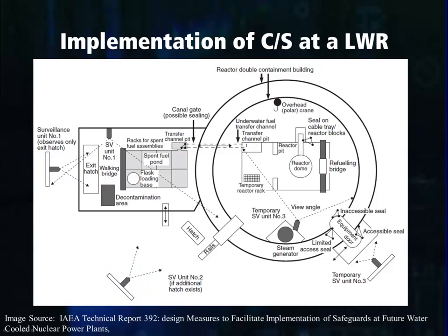An additional point where seals are used is on the reactor cover, or the reactor dome. By placing a seal here, the IAEA can monitor if the reactor core was opened at any point, and then using video surveillance they would be able to determine if fuel was removed from the reactor core or not.